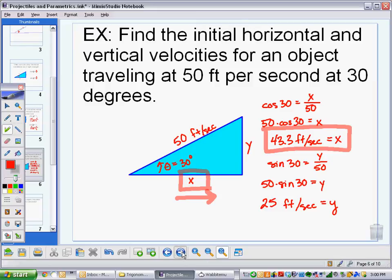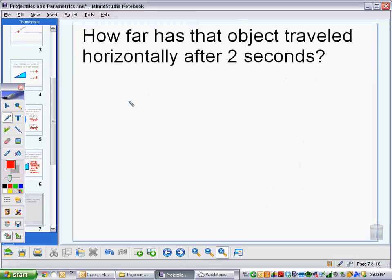So 43.3 times two seconds. 43.3 feet per second multiplied by two seconds. So that would give me 86.6 feet. And that's in the X direction. That's how far it's gone.